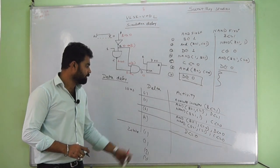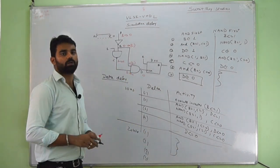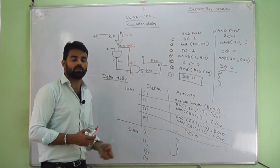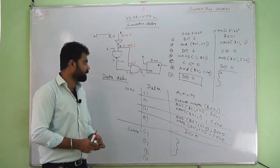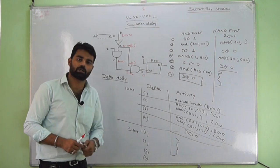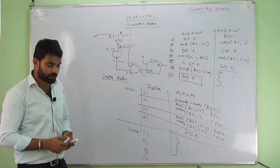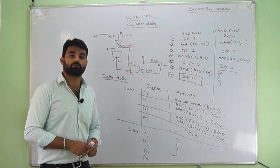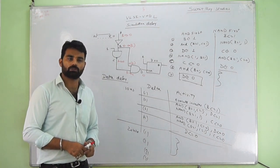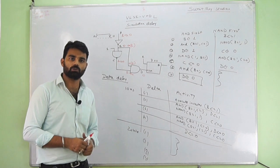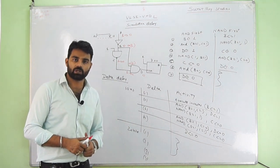Delta delay means all remaining gates are also considered in subsequent deltas. The time is divided into 5 or 6 deltas depending on the condition. This is simulation delay and delta delay for VHDL. We will address your doubts from the next class. Thank you, and please consider subscribing.